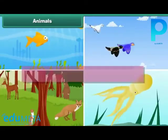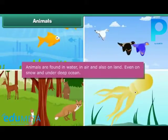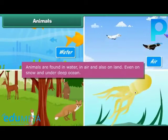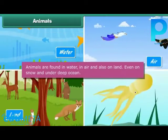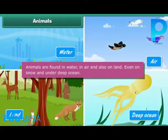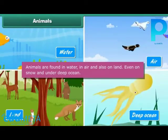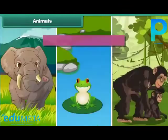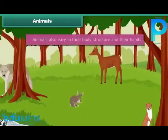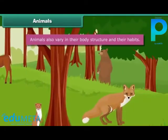Animals are found in water, in air and also on land. Even on snow and under the deep ocean. Animals vary greatly in size and shape. Animals also vary in their body structure and their habits.